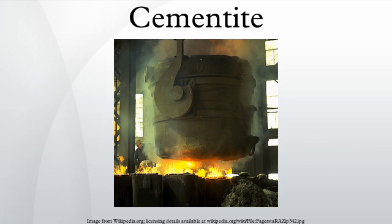In carbon steel, cementite either forms from austenite during cooling or from martensite during tempering. An intimate mixture with ferrite, the other product of austenite, forms a lamellar structure called pearlite.